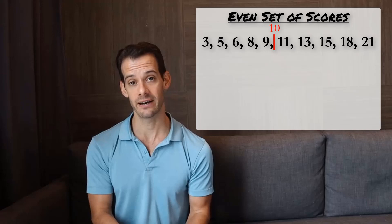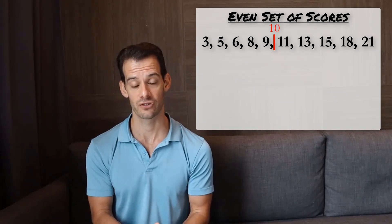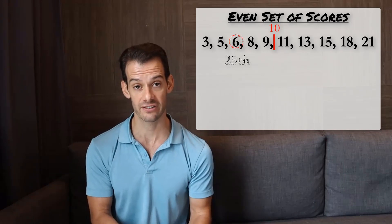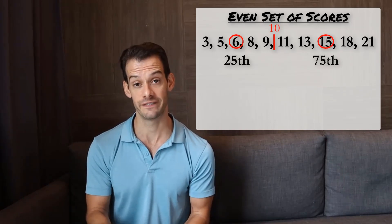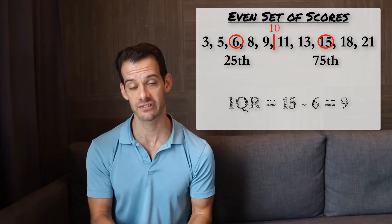Now we can see that this line for 10 neatly divides our data into two halves. And now we take the median of each of those two halves to find the 25th and 75th percentiles. So we have a 25th percentile of 6 and a 75th percentile of 15. This gives us an interquartile range of 15 minus 6 equals 9.